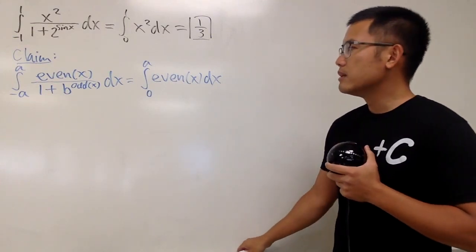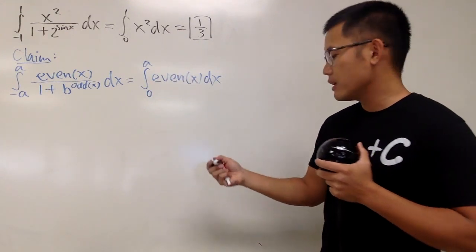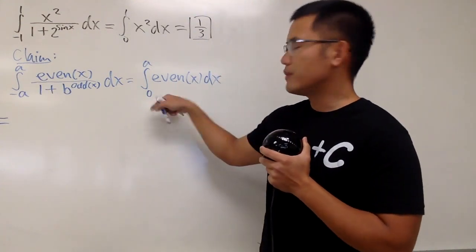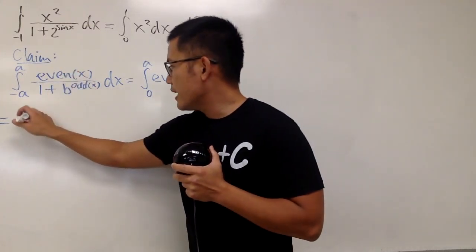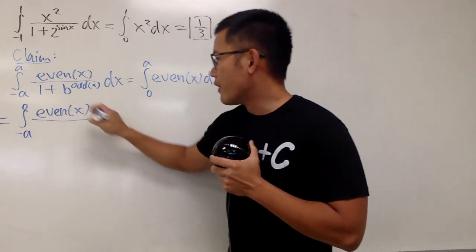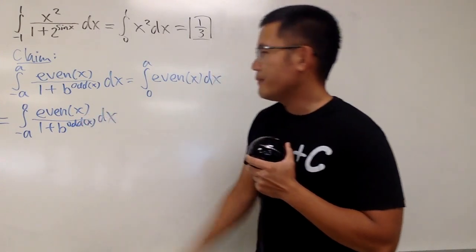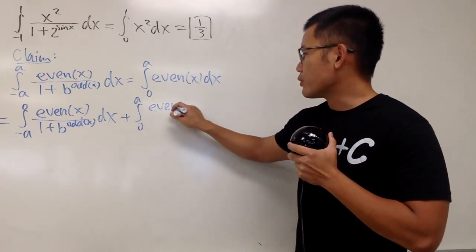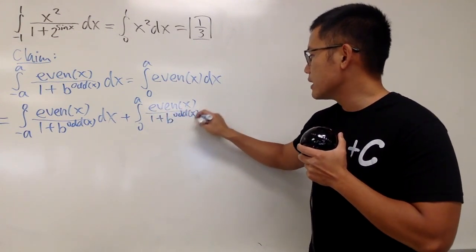So, let's go ahead, and we will work off this from the left-hand side to the right-hand side. So, here we go. We have to go from negative a to a. Well, this is from 0 to a. Let's just cut this integral into two pieces. So, let's look at the integral from negative a to 0, and then we have the even function, even of x, over 1 plus b to the odd of x. And, of course, we have to add from 0 to a, and the integrand right here stays the same, 1 plus b to the odd of x.